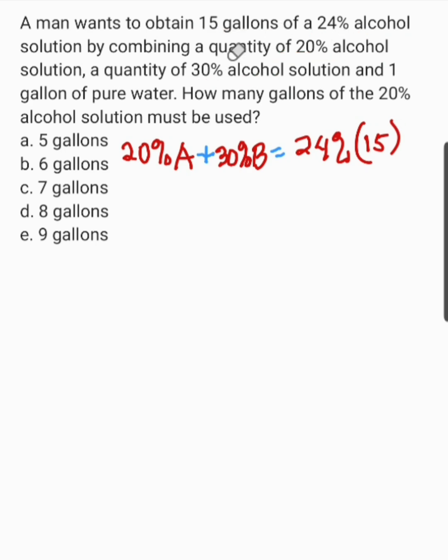Now, explain ko lang ulit. At baka tanong ang tanong nyo ay, paanong nawala na yung 1 gallon of pure water at bakit hindi yan ina-add? Ang ina-add kasi natin dito ay yung pure alcohol. So, 20% of A, 20% yung alcohol na nasa number of gallons A. At ito namang si B, yan yung number of gallons na meron siyang 30% pure alcohol. Ang pinaka-total dyan ay as per given 24% of 15 gallons.